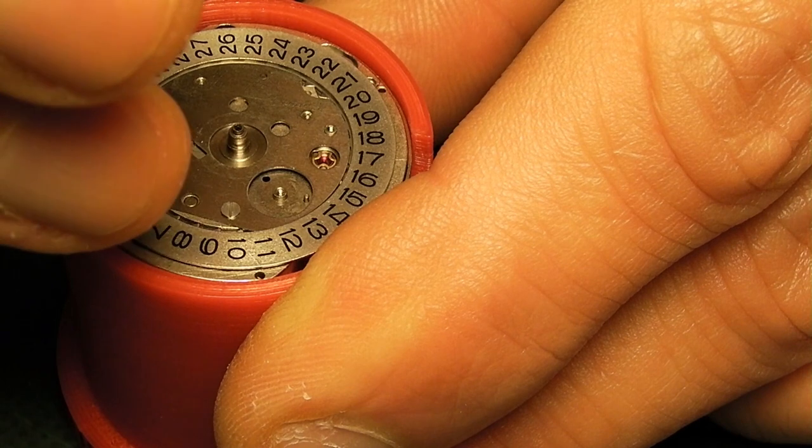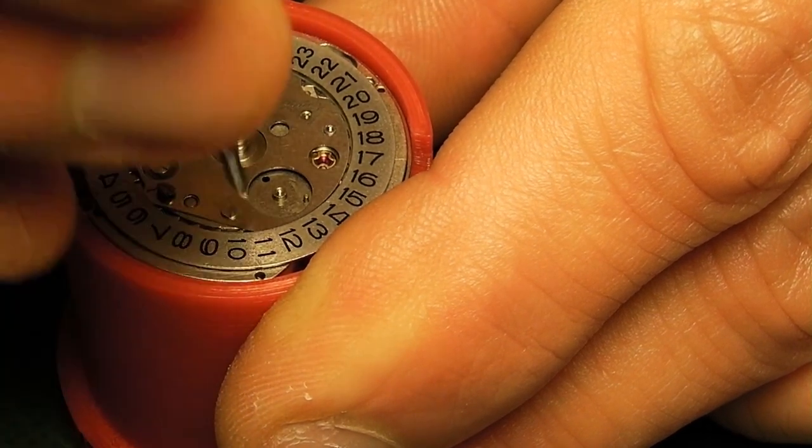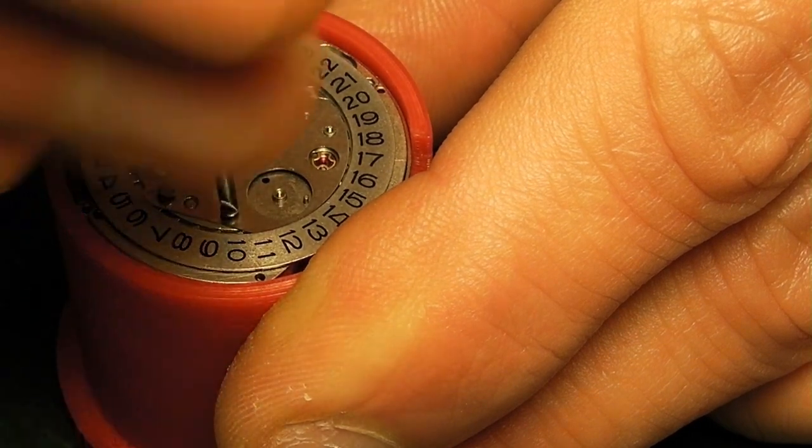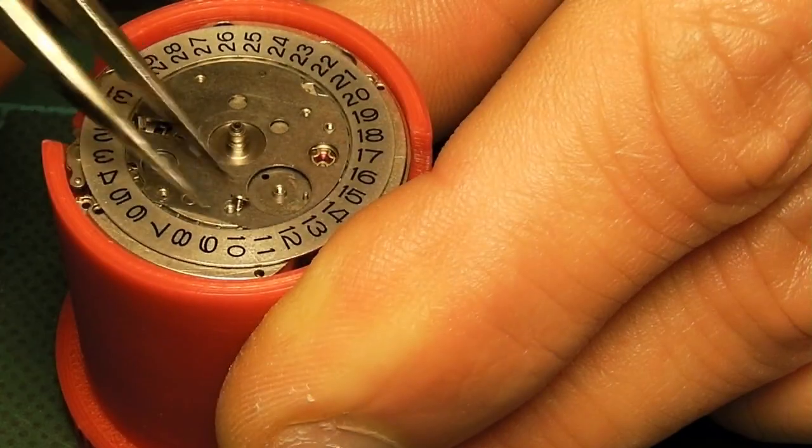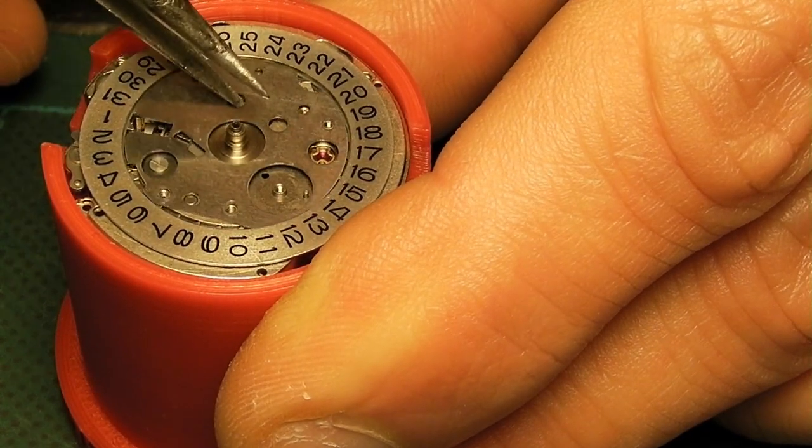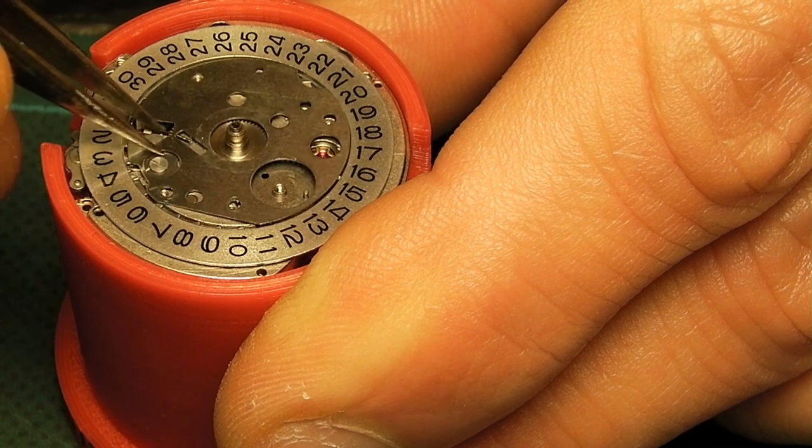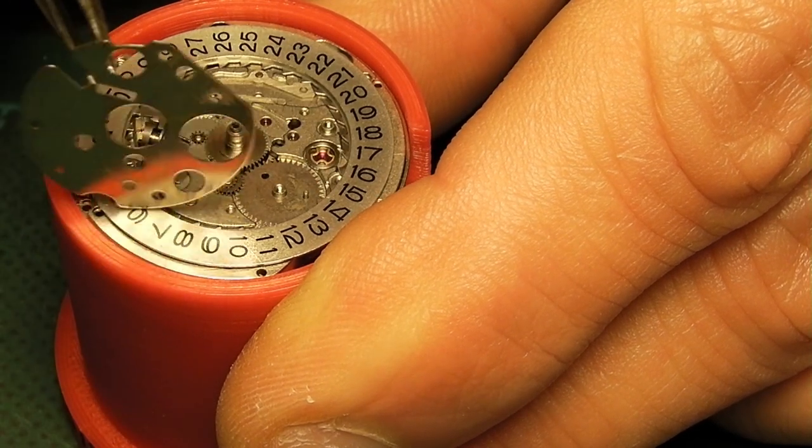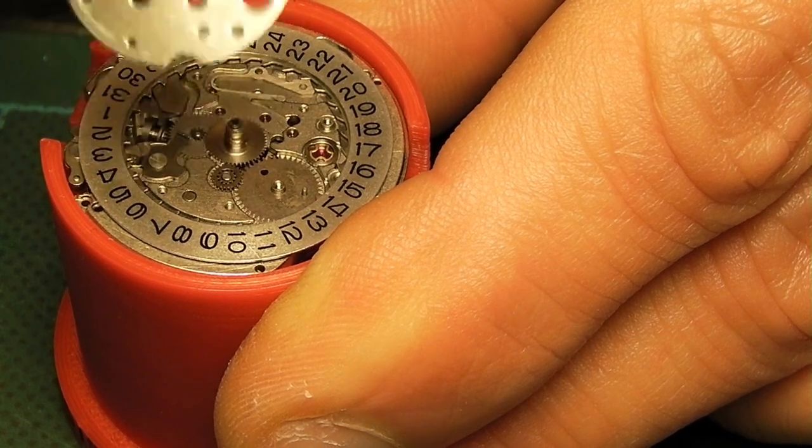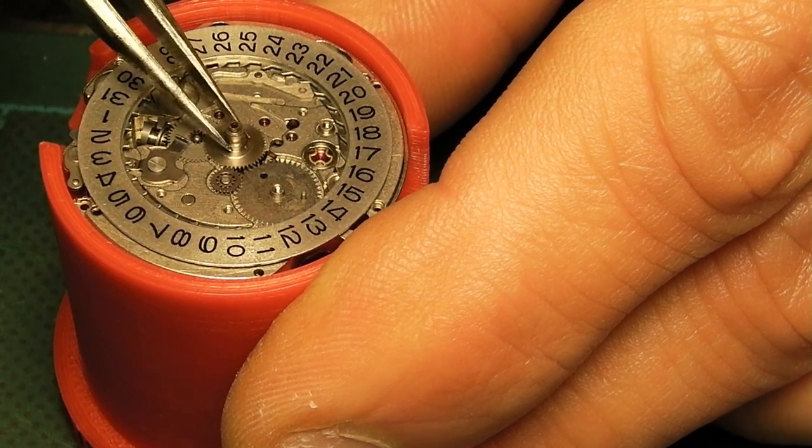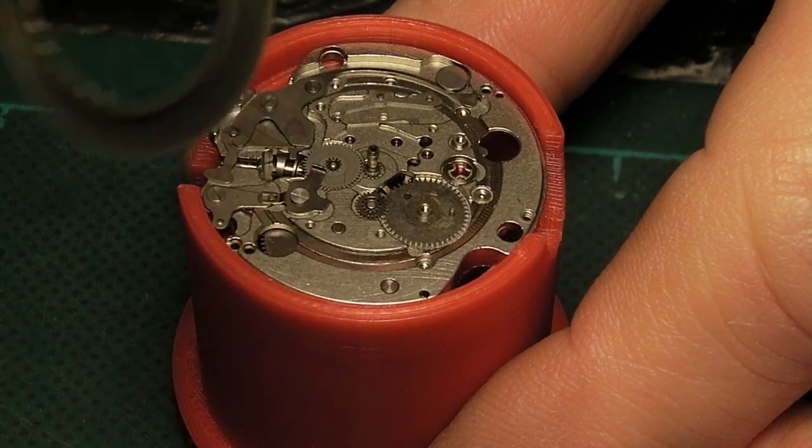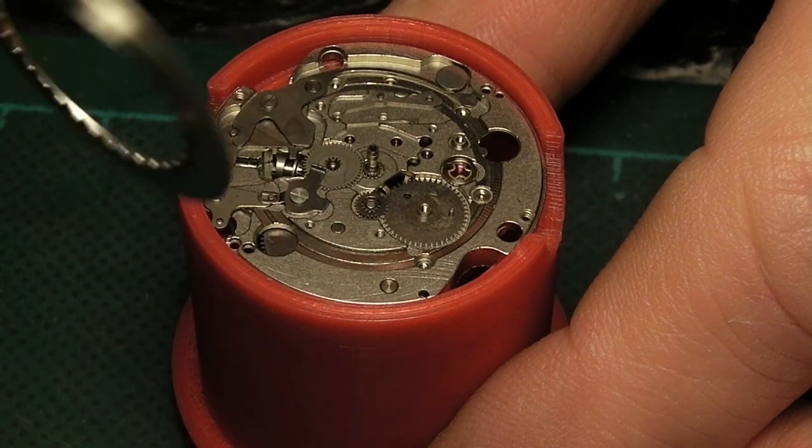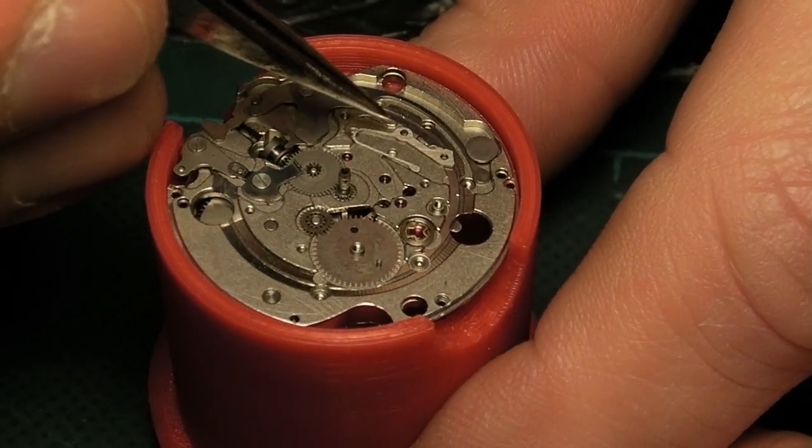Next we remove the two screws at the top that hold the cover plate in place. This in turn holds down the jumper spring for the date ring and the date ring itself. It's always recommended to lift these away very carefully and check the underside because often in movements that have been over-lubricated, things like intermediate wheels can stick to the underside of the plates.